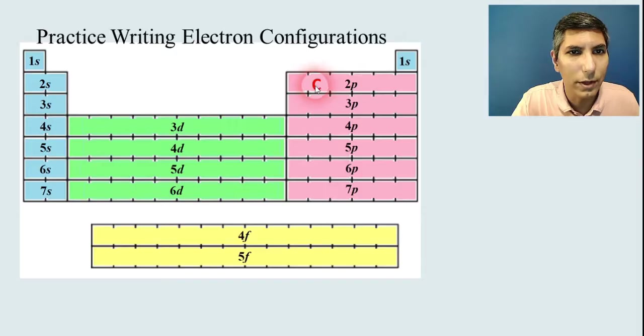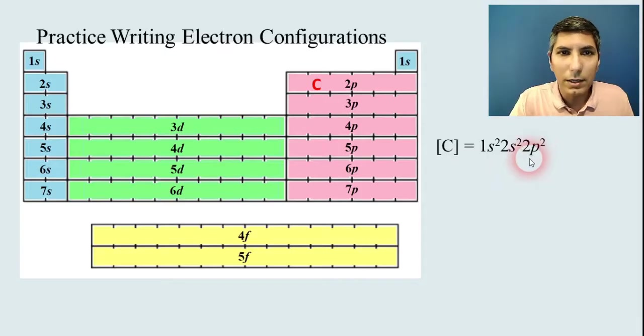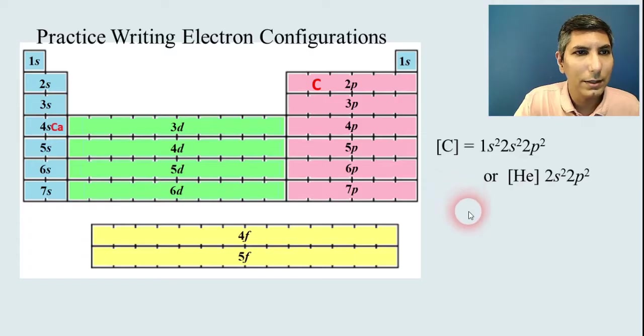Then we go to 2s² and then 2p² because it's in the 2p section. It's the second box, so it's 2p². Now if you want, you can abbreviate this by backing up to the most recent noble gas, which in this case is helium, and then pick up from there. So you can say [He] 2s² 2p², and that works as well.